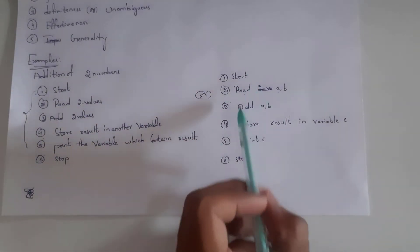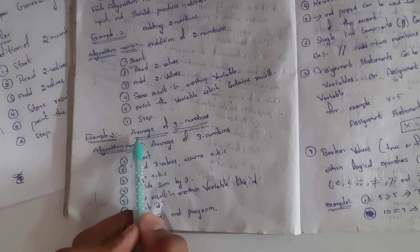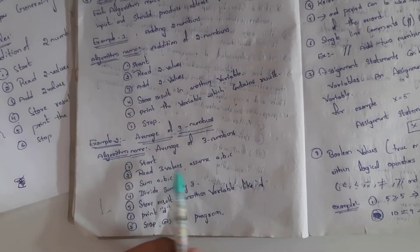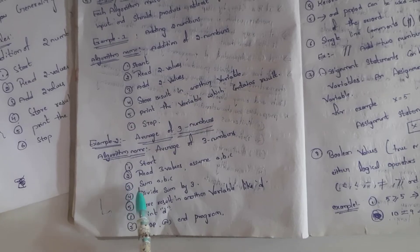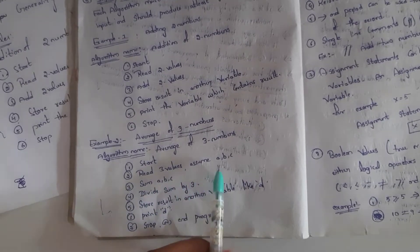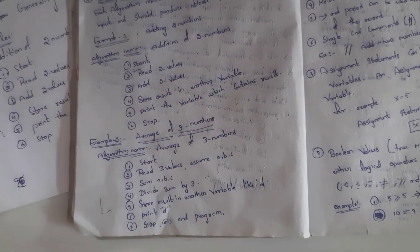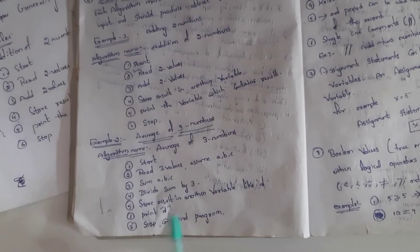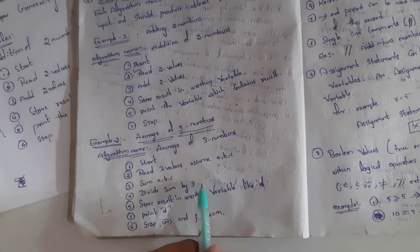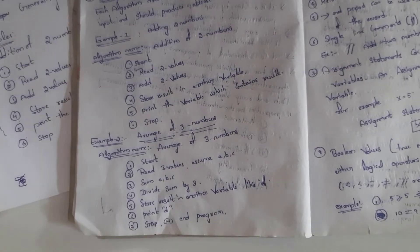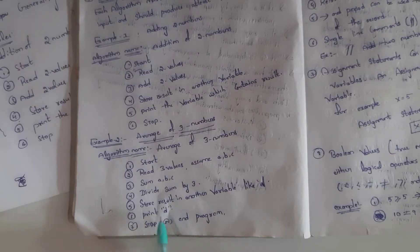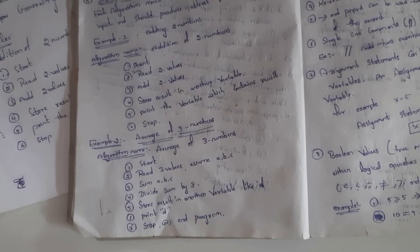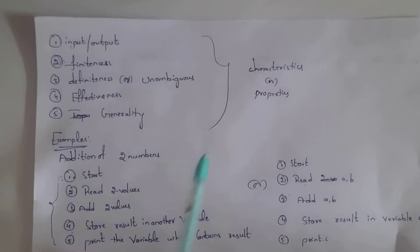Here is another example — an algorithm for the average of three numbers. Step one: Start. Step two: Read three values A, B, and C. Step three: Sum = A + B + C. Step four: Divide sum by three. Step five: Store the result in variable D. Step six: Print D, because it contains the result. Step seven: Stop — or you can also write 'End Program'.